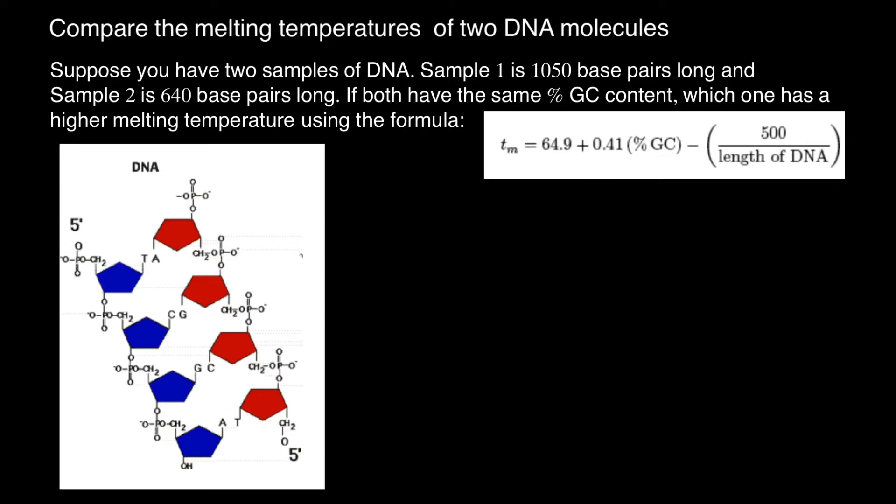Now you also have to understand that, for example, between bases cytosine and guanine, we have triple bond, so one, two, three hydrogen bonds, and between adenine and thymine, we have double hydrogen bond.